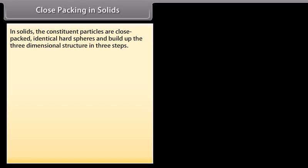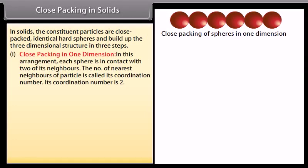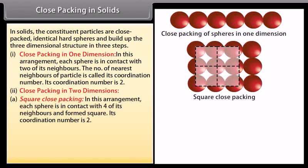In solids, the constituent particles are close-packed as identical hard spheres and build up the three-dimensional structure in three steps. In close packing in one dimension, each sphere is in contact with two of its neighbors, giving a coordination number of 2. In close packing in two dimensions — square close packing — each sphere is in contact with four of its neighbors, forming a square arrangement, with a coordination number of 2.